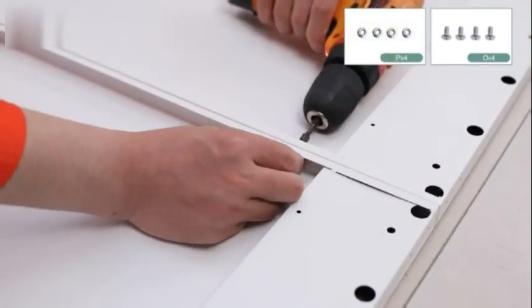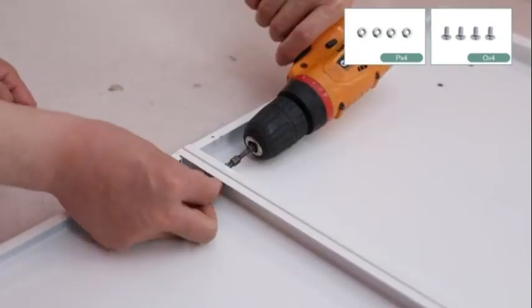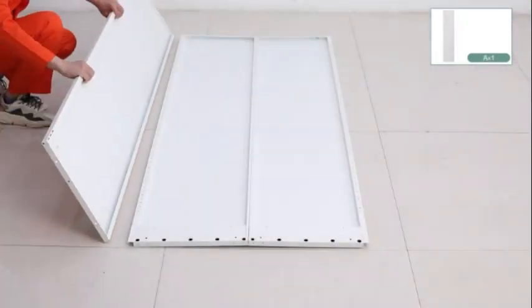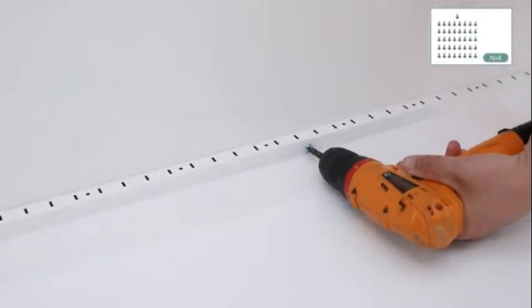With two shelves and three compartments, this freestanding wardrobe provides efficient storage that helps keep your space neat and organized. The painted finish gives it a polished look, while the sturdy metal construction ensures durability.